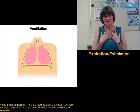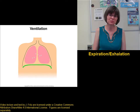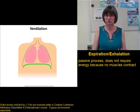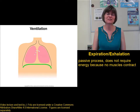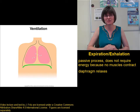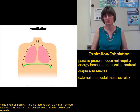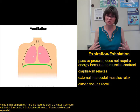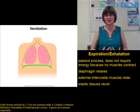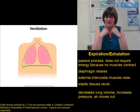Once we get a breath in, we need to breathe it back out. Normal exhalation or expiration is a passive process — it doesn't require energy because muscles are not contracting; instead, things are relaxing. The diaphragm relaxes and gets pushed back up into the thoracic cavity, the external intercostal muscles relax so the ribs tip in and come down, and elastic tissue in the thoracic wall recoils to its original size. All of this decreases thoracic volume, increases pressure in the lungs, and air flows out.